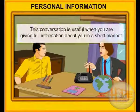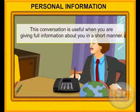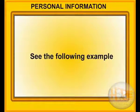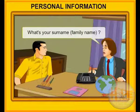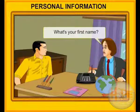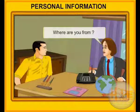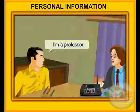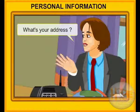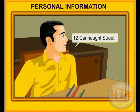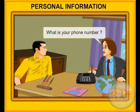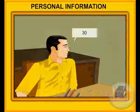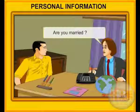Personal information. This conversation is useful when you are giving full information about yourself in a short manner. What's your surname? Family name: Dixit. What's your first name? Robin. Where are you from? New Delhi. What's your job? I am a professor. What's your address? 12 Cannot Street. What is your phone number? 506 358 75. How old are you? 30. Are you married? Yes, I am.